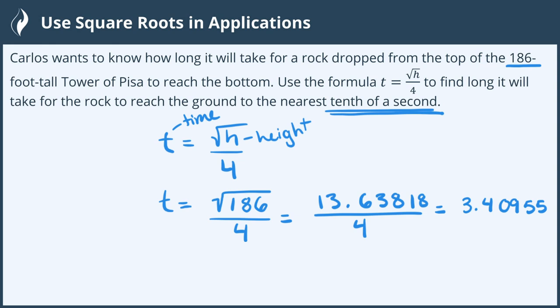We'll stop there because we only need to go to the tenth of a second. We go to the tenth place value, we look to the right, 0 is less than 5, so it rounds the rest of these down to 0. So our answer is 3.4 seconds for this rock to drop from the tower of Pisa. And we're all done.